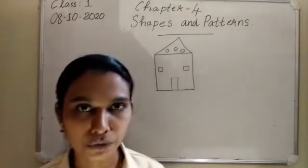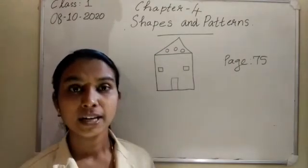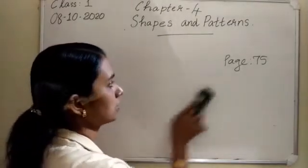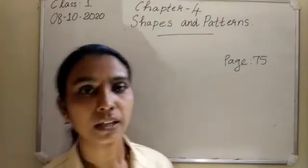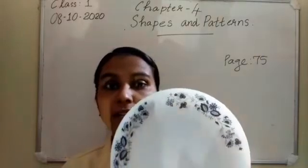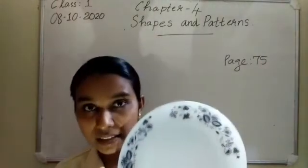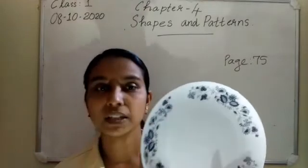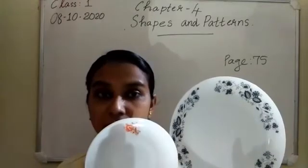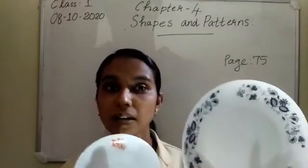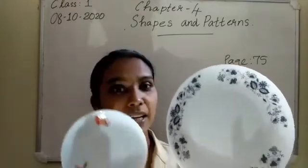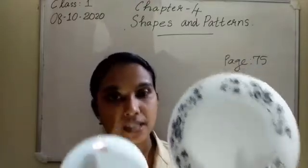Next we are going to study same shapes - which shapes are the same. Look at this plate. What is the shape of it? It is a circle. Both of these are circles - same shape.